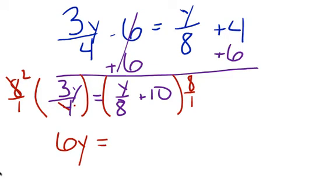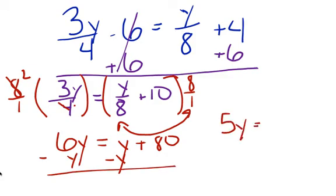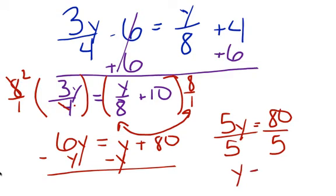So we're going to multiply both sides by 8. Remember, 4 and 8 share a factor of 4: 4 goes into 4 one time, 4 goes into 8 two times, so 2 times 3y is 6y. And over here, my 8 and my 8 cancel out to give me 1, so I'm just left with y all by itself. That's going to be y plus 80, since 10 times 8 is 80. Subtracting y from both sides gives me 5y equals 80. I divide each side by 5, and y is equal to 16.